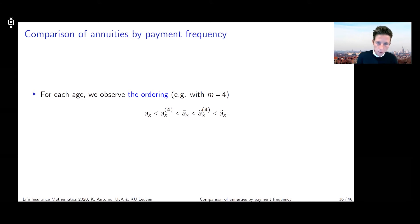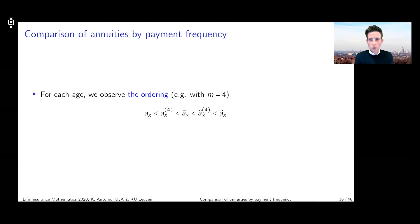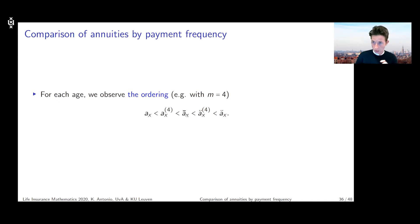I want to give a little bit of intuition about why this particular ordering should be valid. There is of course a lot of notation on this sheet, so we need to make sure we understand what is meant by each of the symbols. In the middle we have ā_x, the continuous annuity issued to a policyholder, continuously payable as long as they are alive.